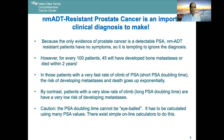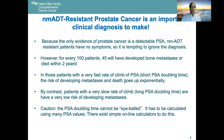In those patients that have a very rapid climb of their PSA — which is called a short PSA doubling time — the risk of developing metastases and death goes up very rapidly. By contrast, patients with a very slow rate of climb, a long PSA doubling time, have a very low risk of developing metastases.